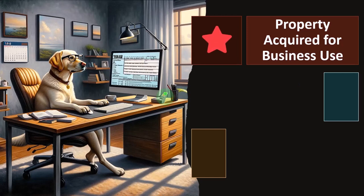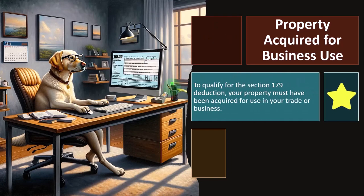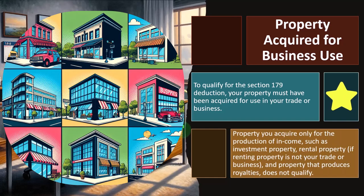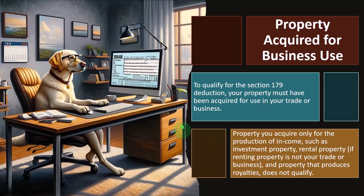Property Acquired for Business Use: to qualify for the Section 179 deduction, your property must have been acquired for use in your trade or business. This seems straightforward, but has to be mentioned. If you bought a private car that you're not using for work, you can't deduct it. It would have to be for business use. Property you acquire only for the production of income, such as investment property or rental property if renting is not your trade or business, and property that produces royalties does not qualify.